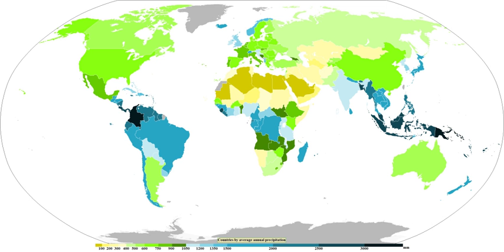The main ways water vapor is added to the air are: wind convergence into areas of upward motion, precipitation or virga falling from above, daytime heating evaporating water from the surface of oceans, water bodies or wet land, transpiration from plants, cool or dry air moving over warmer water, and lifting air over mountains.